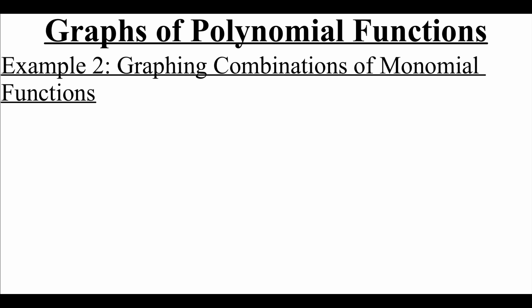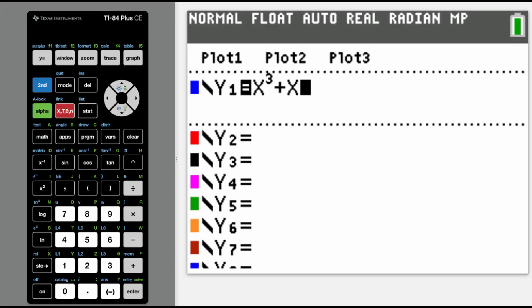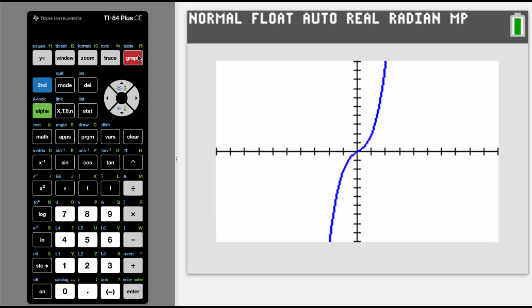Instead of just looking at transformations of parent functions, we're going to look at graphing combinations of monomial functions. The first function I want to take a look at is f of x equals x cubed plus x. Looking at the graph, it's got the shape of a normal cubic function, it passes through the origin, so it has an x-intercept or zero at x equals zero. I can also see there are no peaks or valleys, so there would be no local extrema — no minimums or maximums.